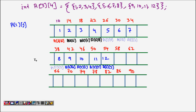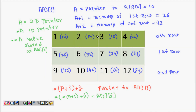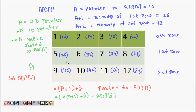In this lecture we are going to learn about two-dimensional arrays and pointers. Two-dimensional arrays are used to represent a table or matrix. For a two-dimensional array of integers, I can define it like a[3][4], which means three rows and four columns, giving a total of 12 elements.